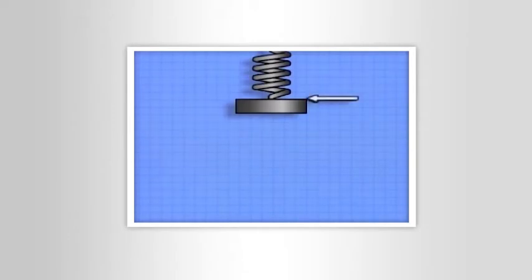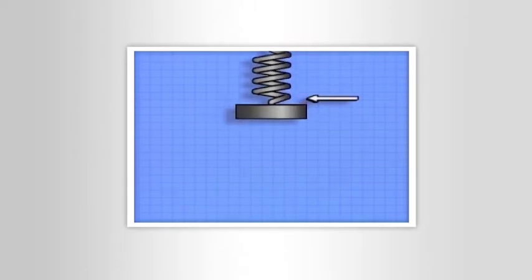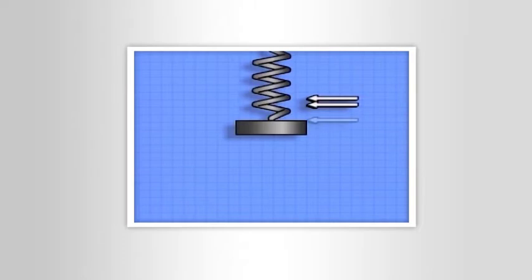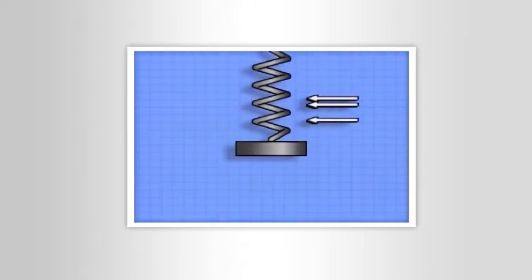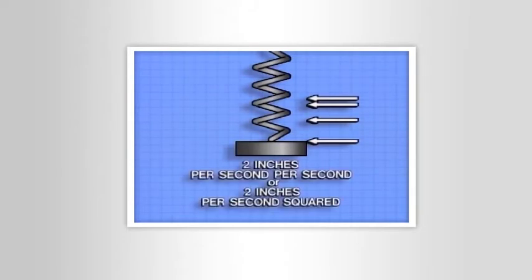We can then say that the block was traveling an additional two inches for every second that passed. In other words, the block was accelerating at a rate of two inches per second per second, or two inches per second squared.